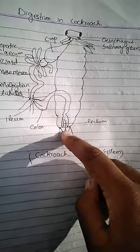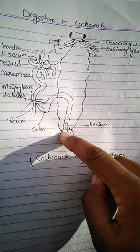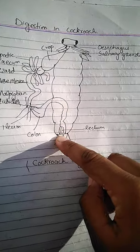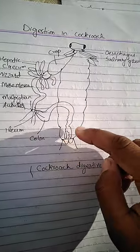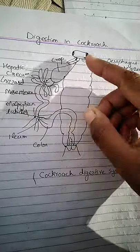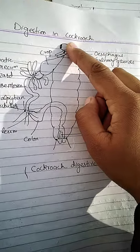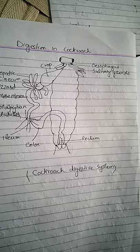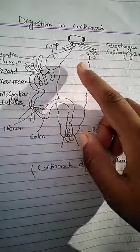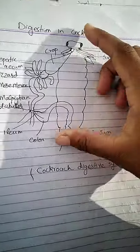These are cercii and they are involved in sensory perception. The digestive system of the cockroach is tubular type, meaning the mouth opening and the anus opening are separate in the case of the cockroach.